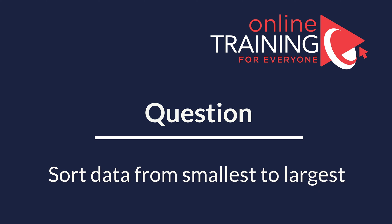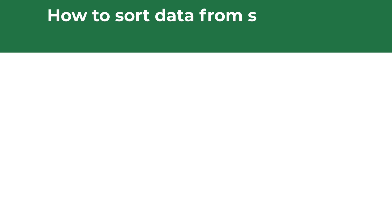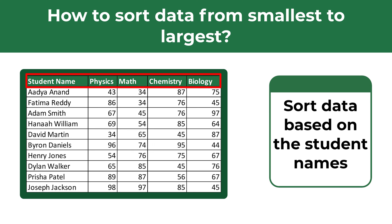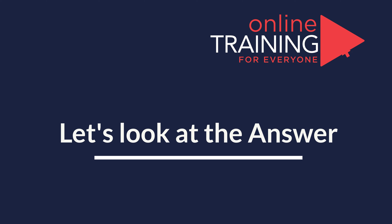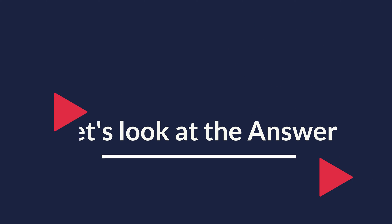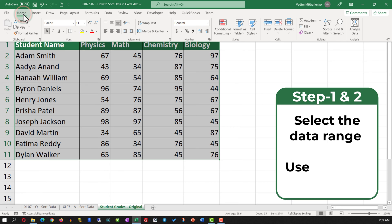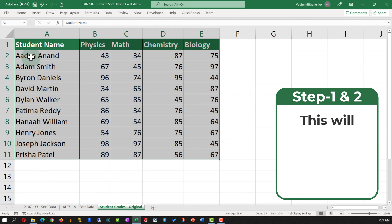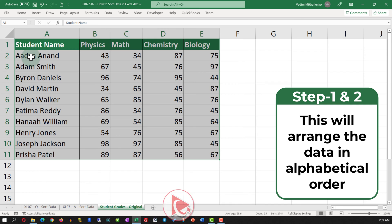A lot of times you might get a question on how to sort data in Excel from smallest to largest. For example, you might be presented with a data set showing student names and their grades in different subjects — here we see grades in physics, math, chemistry, and biology. We need to sort this data set based on student names. To do this, select the data set and on the Home tab navigate to Sort and Filter, sorting based on the student name.